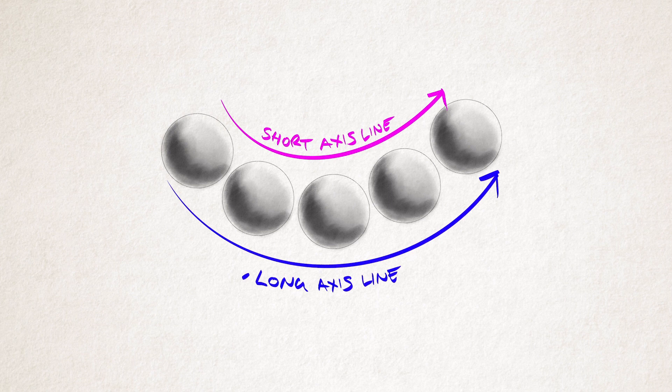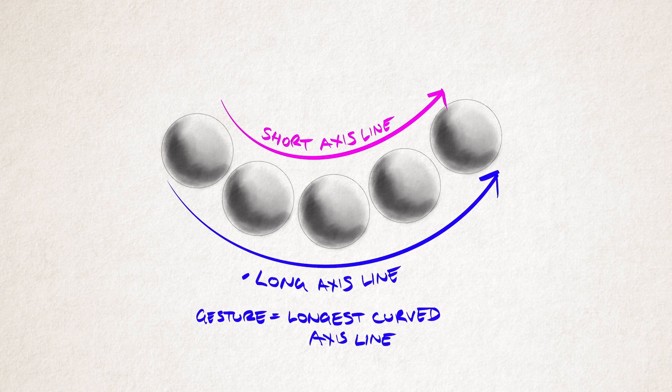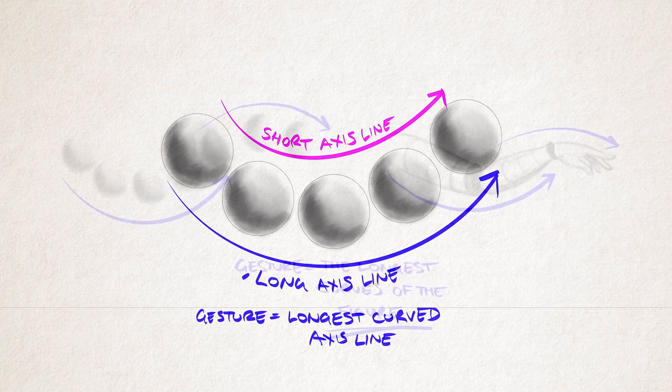So, if we evolve our definition a little more, we can say gesture is the longest curved axis line available to us, or in even simpler terms, the longest curves of the figure.